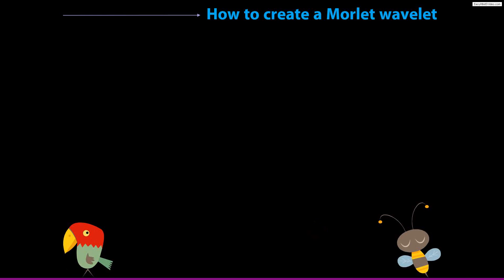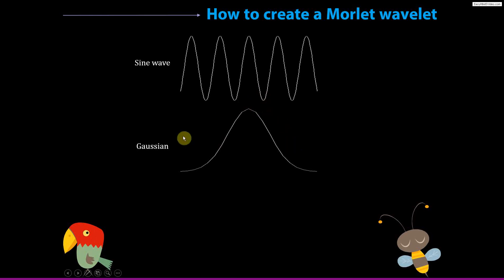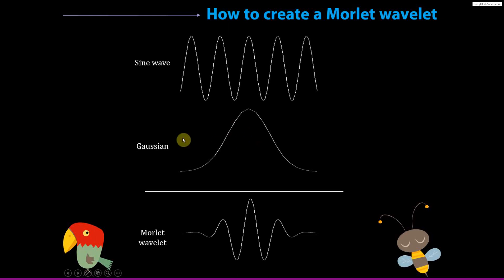So how do we create a Morley wavelet? It's very simple: we start with a pure sine wave, we take a Gaussian, and we multiply them point by point. You might think of a dot product, except with a dot product we would sum all these values together — but we don't want to sum. We just pointwise multiply the Gaussian by the sine wave, and that gives us our Morley wavelet.